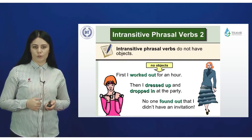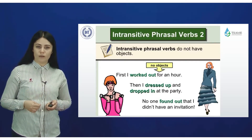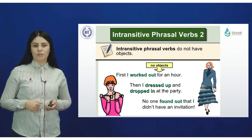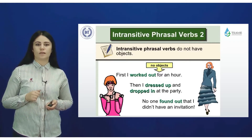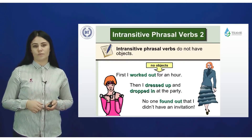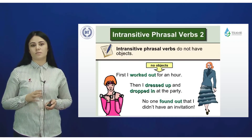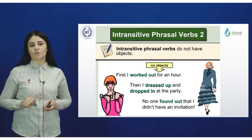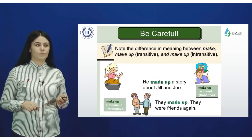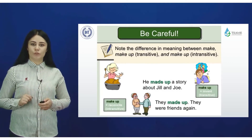Here is an example with multiple intransitive phrasal verbs: 'First I worked out for an hour, then I dressed up and dropped in at the party. No one found out that I didn't have an invitation.' Notice there is no object after any of these phrasal verbs.